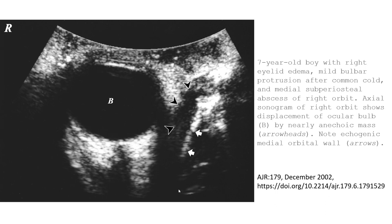This is the second case on ultrasound, where we can find this surface. There is evidence of displacement of the ocular globe by a nearly echogenic mass and echogenic medial orbital wall.